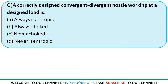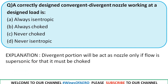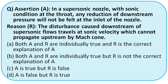First question: a correctly designed convergent-divergent nozzle working at an off-design load is — always isentropic, always choked, never choked, or never isentropic? The explanation: the divergent portion acts as a nozzle only if the flow is supersonic, and for that it must be choked. So the right answer is option B.